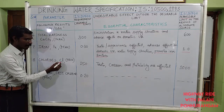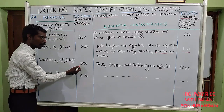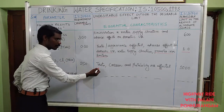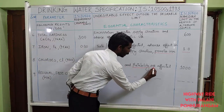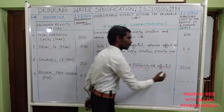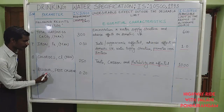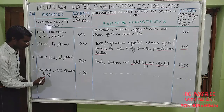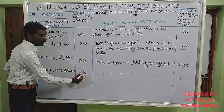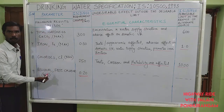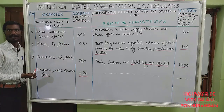The eighth essential characteristic is chlorides (Cl). The maximum desirable limit is 250. If it is more than 250, taste, corrosion, and mainly palatability are affected. The permissible limit is 1000. The last essential characteristic is residual free chlorine — there is a minimum level. The desirable limit is 0.2, and there is no permissible limit for residual chlorine. These are the essential characteristics of the water quality standard.